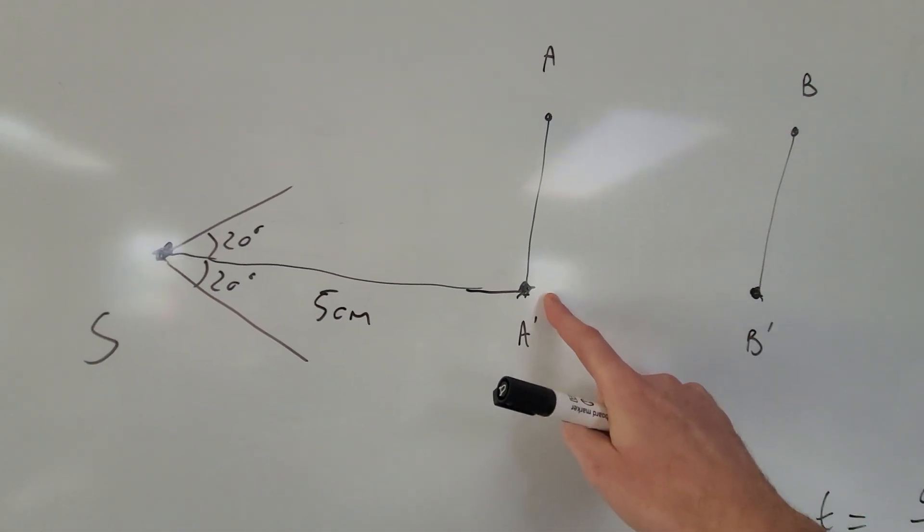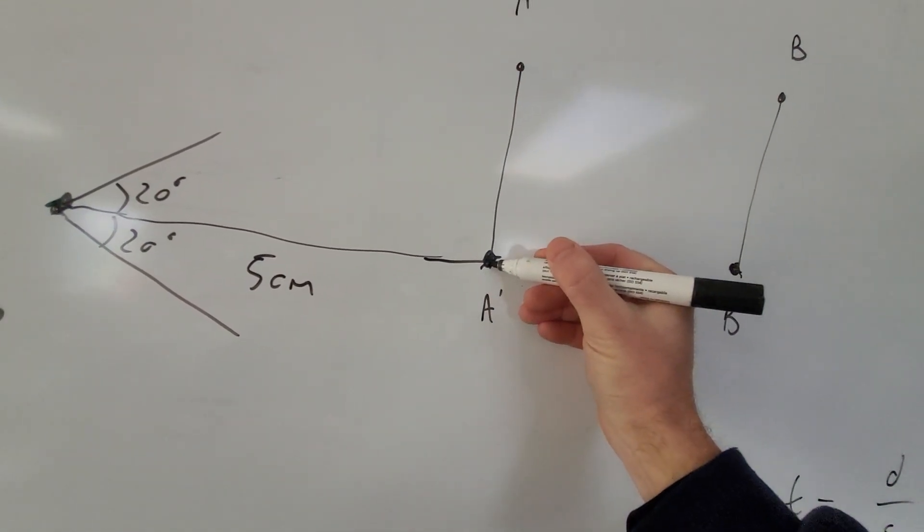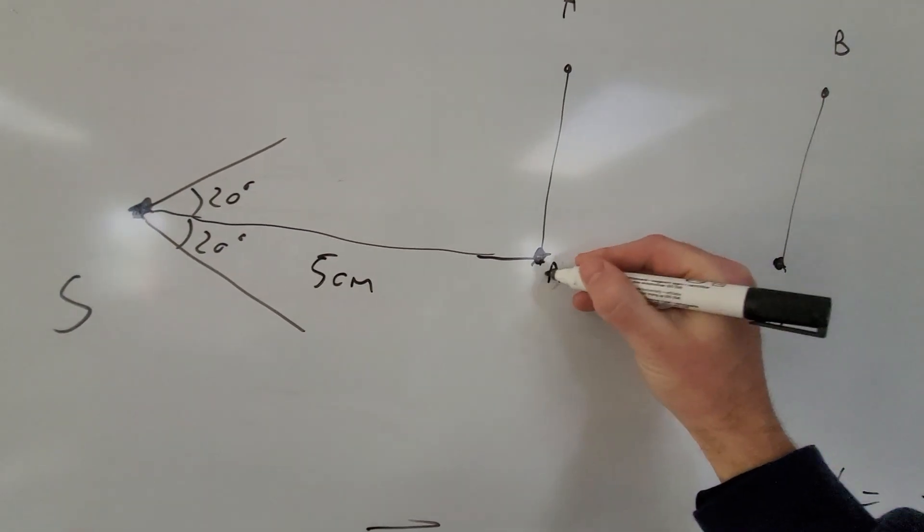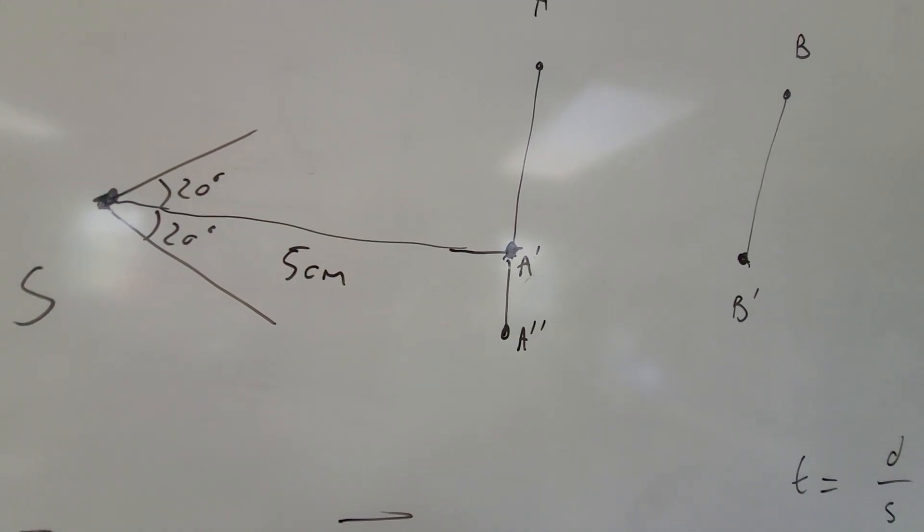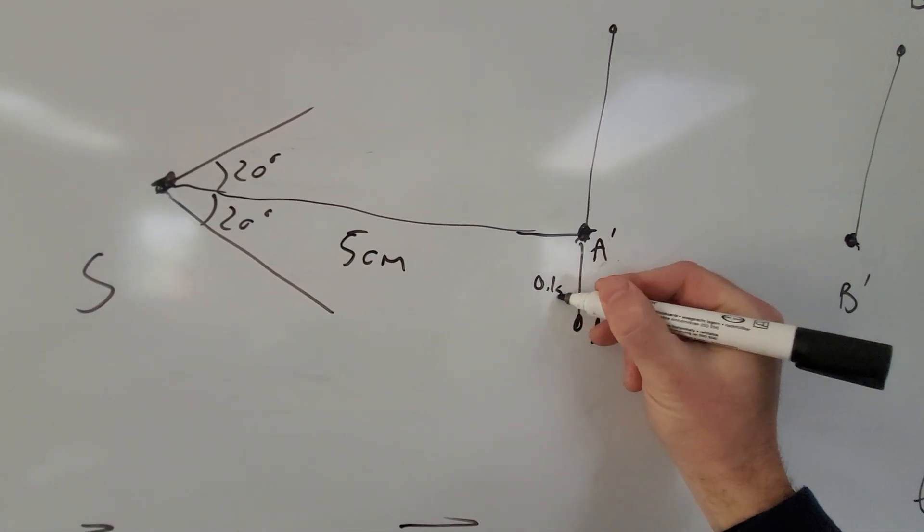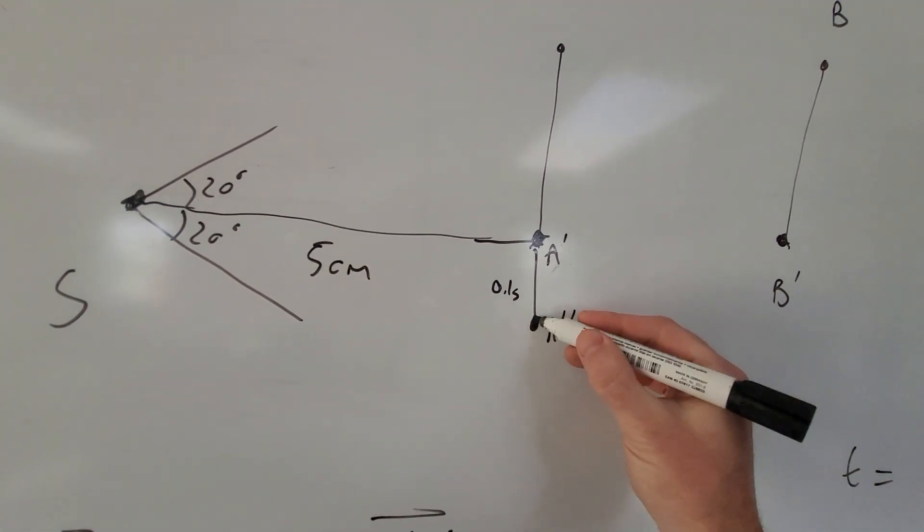Now, the problem with that is that mosquito A, because it's on a path, it's already moved a little bit further. And so what that means is we can then work out the position A'', which is the position of mosquito A 0.1 seconds after being at position A prime. So we can work out this new position.